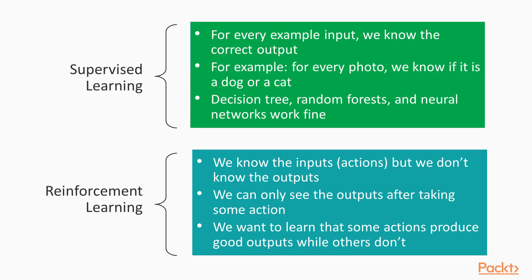Supervised learning and reinforcement learning are different approaches in machine learning. In supervised learning, such as identifying a photo as a dog or a cat, we have lots of training examples and we must know the true answer for every training example. In prior videos, particularly the video series Python Artificial Intelligence Projects for Beginners, we looked at supervised learning methods like decision trees, random forests, and neural networks.